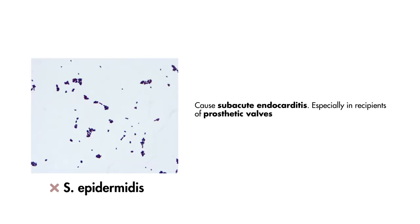Staph epidermidis and other coagulase-negative staphylococci tend to produce subacute endocarditis in recipients of prosthetic valves. Staph epidermidis infections can be seen in intravenous drug users, but is less common than Staph aureus.